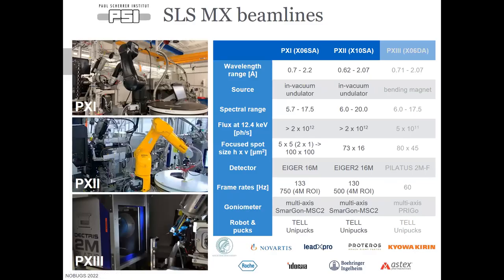For some quick context, I'm part of the MX group and we have three experimental end stations at the Swiss Light Source: PX1, PX2, and PX3. The first two beamlines are in-vacuum undulator beamlines with Eiger detectors and Smargon multi-axis goniometers. Our third beamline, which is grayed out, is currently part of the phase zero build for the SLS 2.0 project. Currently we're running with two beamlines, and our PX2 beamline is quite special as it's our partner beamline, with nine partners who fund and predominantly use it.